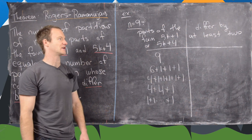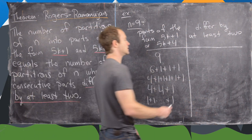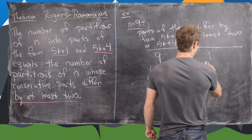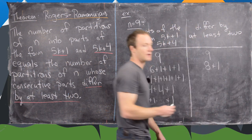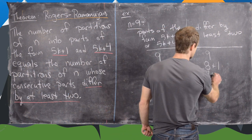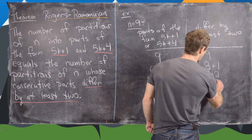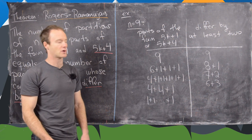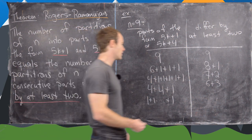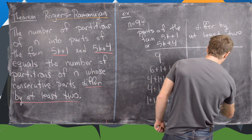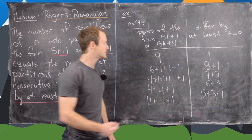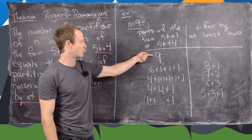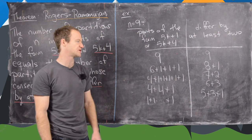Now let's look at partitions of 9 whose consecutive parts differ by at least 2. We could have 9 itself, 8 plus 1 (differ by at least 2), 7 plus 2, 6 plus 3 (those differ by 2). Notice we can't have 5 plus 4 because those only differ by 1. But we can have 5 plus 3 plus 1. So over here we also have 5 partitions of that type.